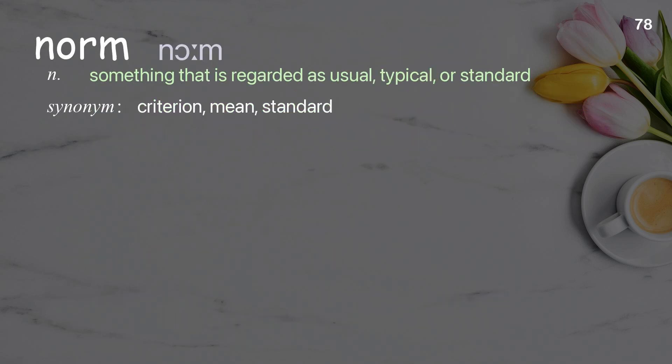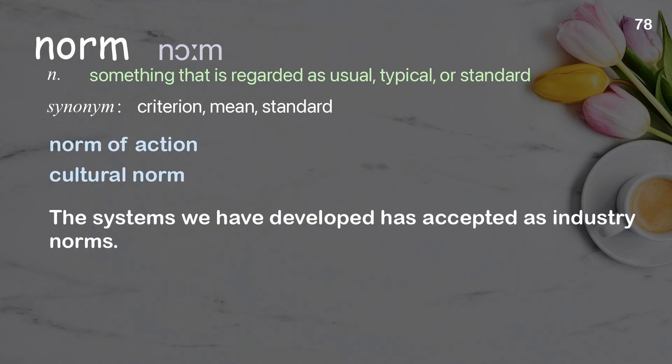Norm: something that is regarded as usual, typical, or standard. Examples: norm of action, cultural norm. The systems we have developed have been accepted as industry norms.